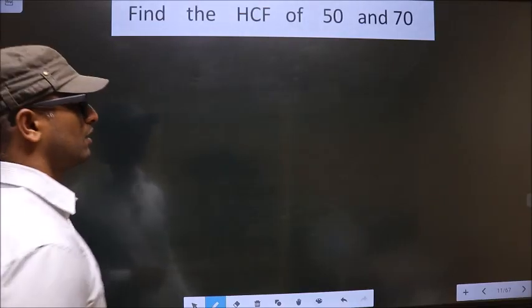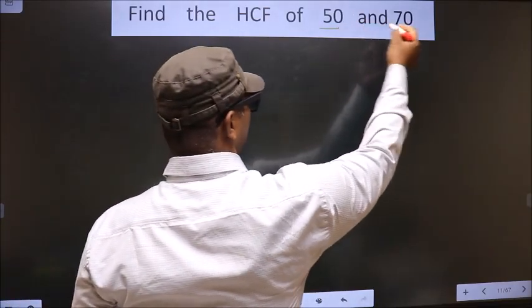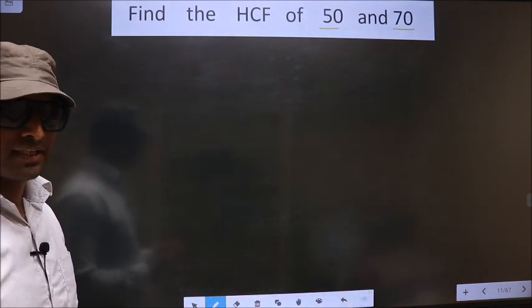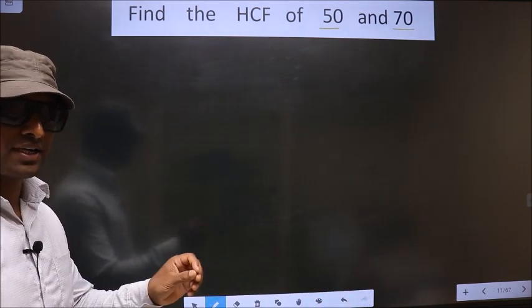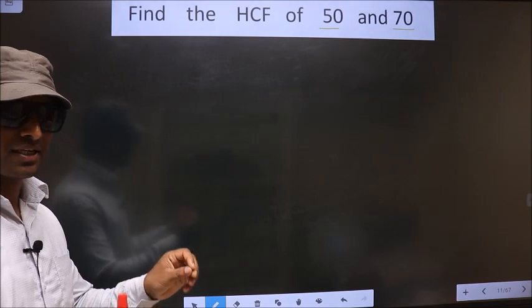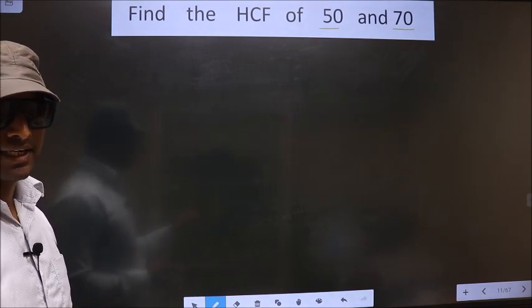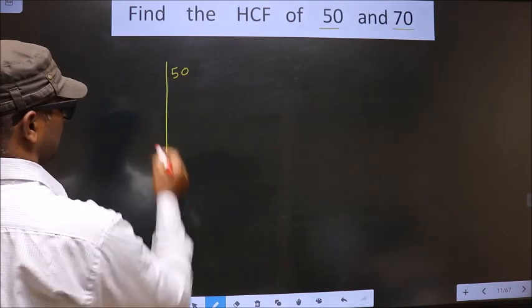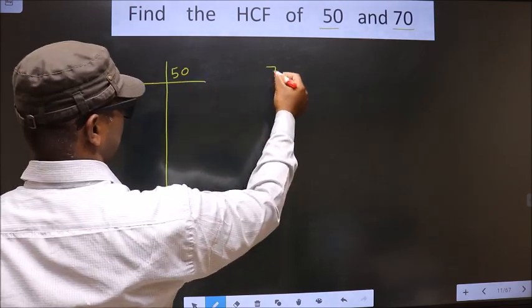Find the HCF of 50 and 70. To find the HCF, first we should do the prime factorization of each number separately. 50, 70.